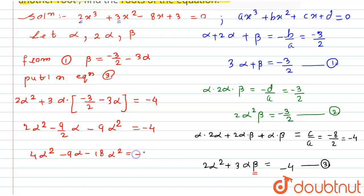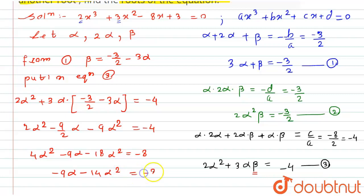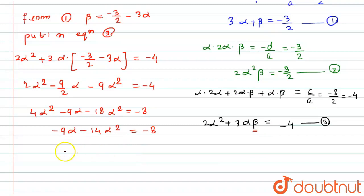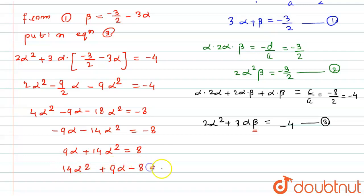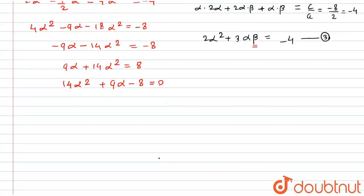Taking the common denominator of 2: 4α² - 9α - 18α² = -8. On subtracting: -14α² - 9α = -8. Taking minus sign as common: 14α² + 9α = 8. Forming the equation: 14α² + 9α - 8 = 0.